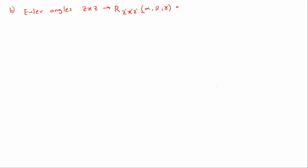As it is an Euler angle representation, the calculation would be performed in the order in which the frames were rotated. Hence you would have your rotation about Z with angle alpha, your rotation about X with angle beta, and your rotation about Z with angle gamma. The question asks us to find the angles of rotation, which is alpha, beta and gamma. So we have to solve for that.